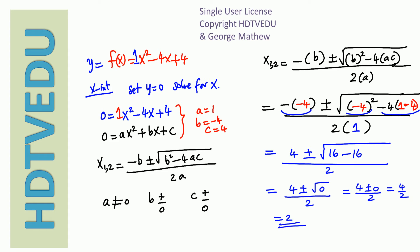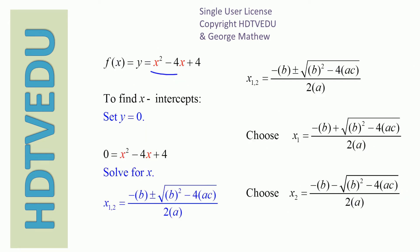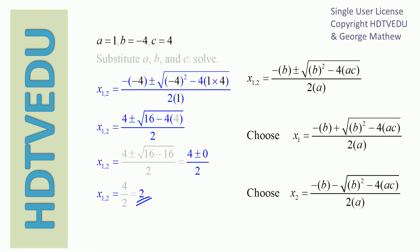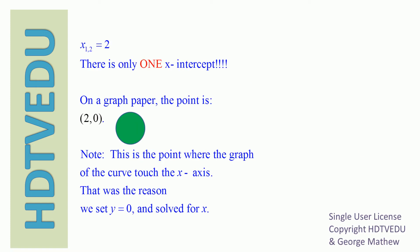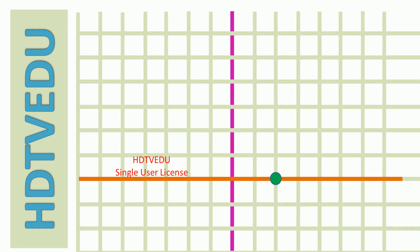There is only one x in the solution set and that is 2. So f(x) equals x squared minus 4x plus 4: set y equal to 0, giving 0 equals x squared minus 4x plus 4, then solve for x. When we solve for the x-intercept we get only one x-intercept and that is (2, 0). This is the point where the graph of the curve touches the x-axis.